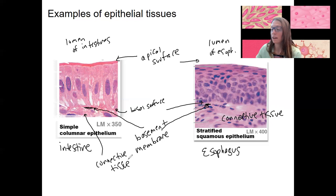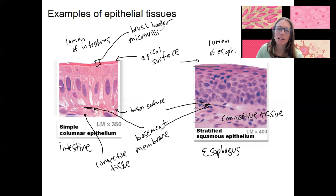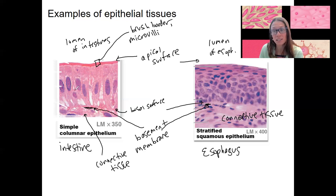On the apical surface of the intestines, we've got this funky little pink layer called the brush border. It's made up of microvilli — microvilli are the individual structures; brush border is what it's called overall. Microvilli are cytoskeletal extensions of the plasma membrane composed of microfilaments in thin strands. They increase the surface area for absorption. So these cells are going to absorb, which shouldn't be too surprising since we're talking about the intestine.